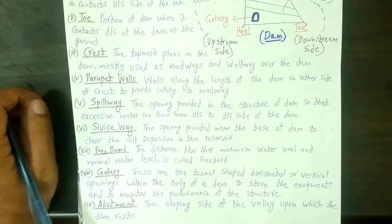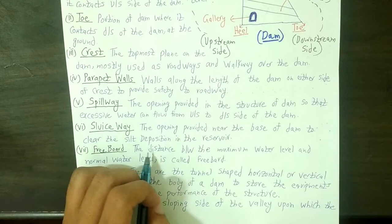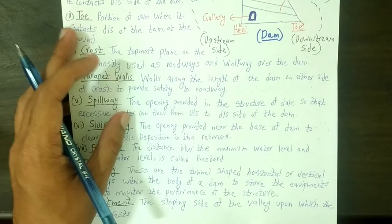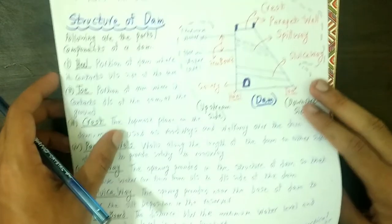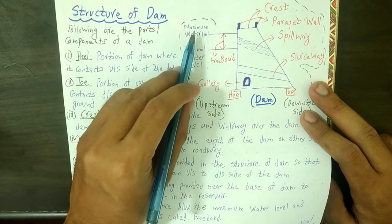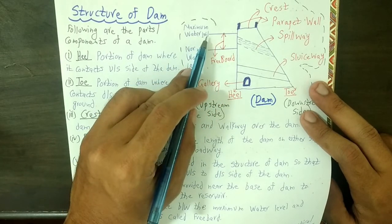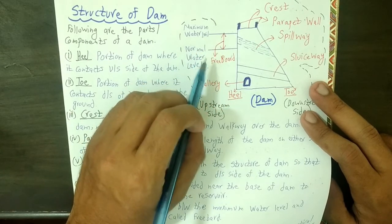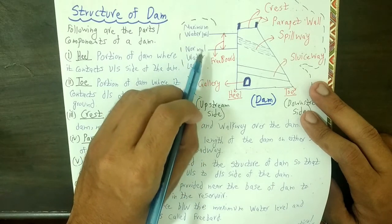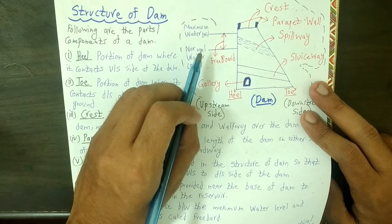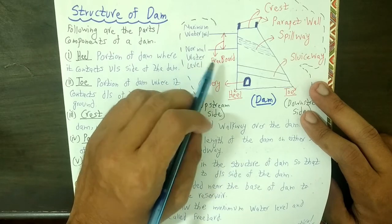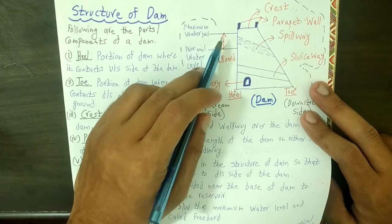Next is the freeboard. The definition of freeboard is: the distance between the maximum water level and the normal water level is called freeboard. Looking at the diagram, the line representing the maximum water level exists on the upstream side, and here is the normal water level which generally exists as the minimum water level.